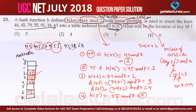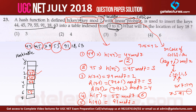Next we have 91. Hash(91) = 91 mod 7. Since 91 is completely divisible by 7 (7 × 13 = 91), the remainder is 0. Therefore, 91 is stored at index location 0.